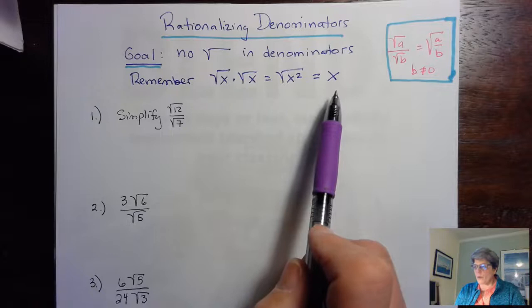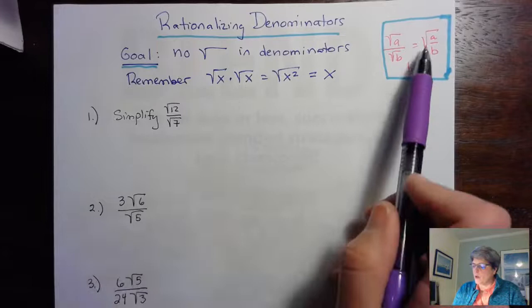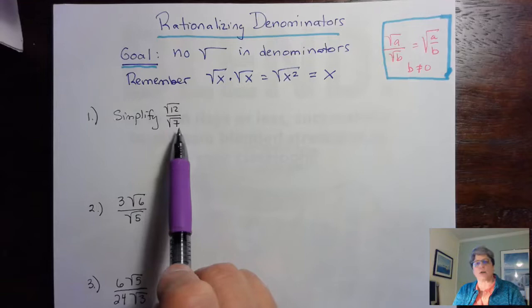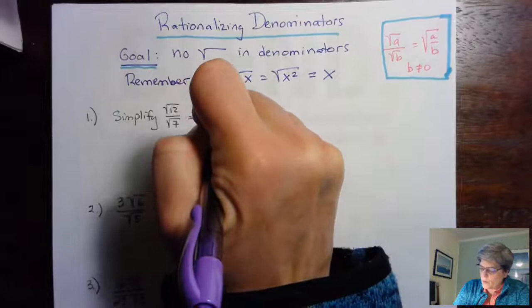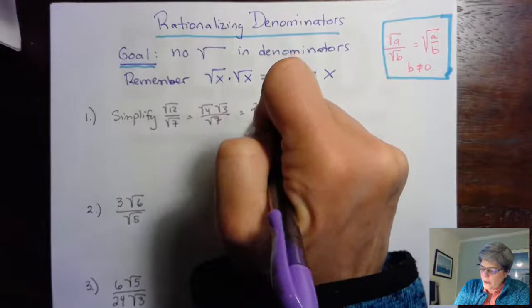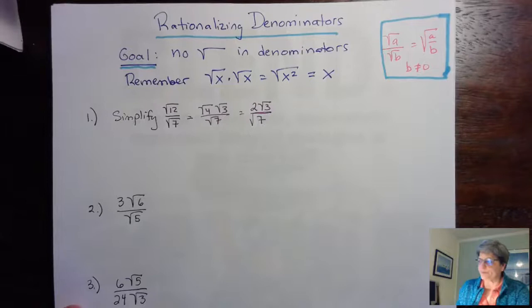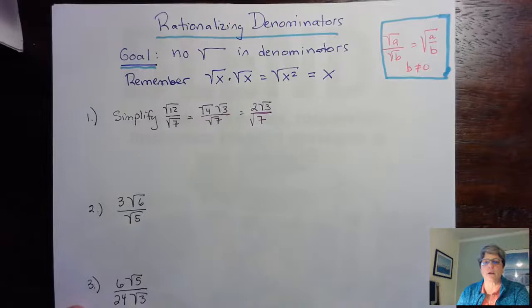This is a key part in what we're going to do here. We start by doing the work from part one of the video, which was simplifying the radical. This one already needs to be simplified, because the square root of 12 is the square root of 4 times the square root of 3, and that's 2 root 3 over root 7. We might think we're done, but we're not, because you can't leave a square root in the denominator.